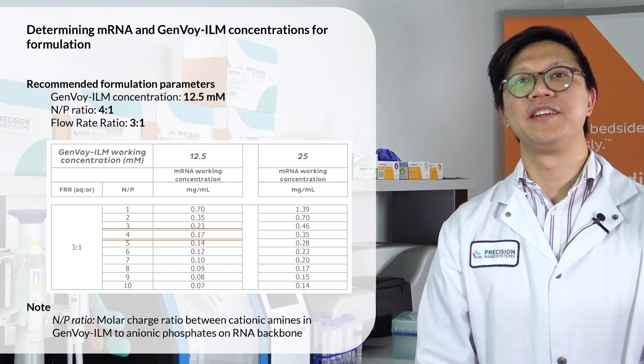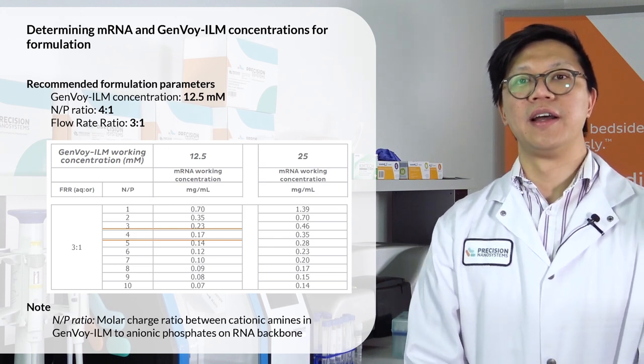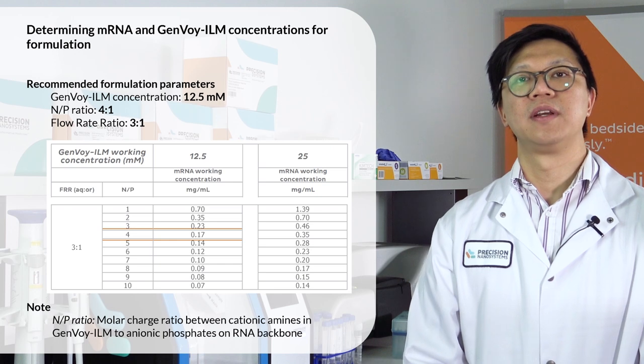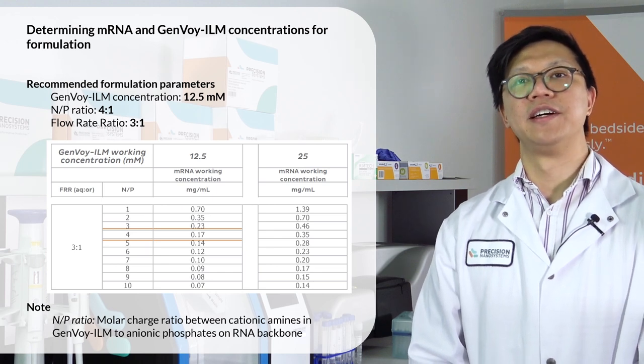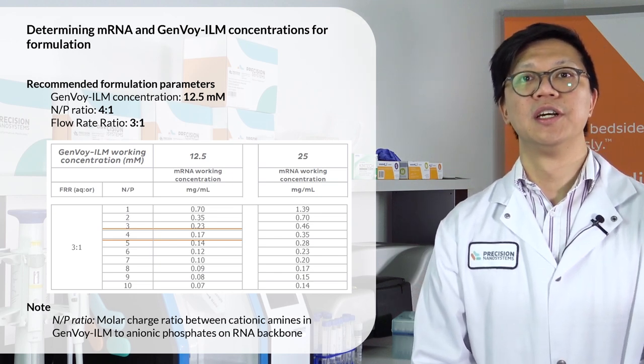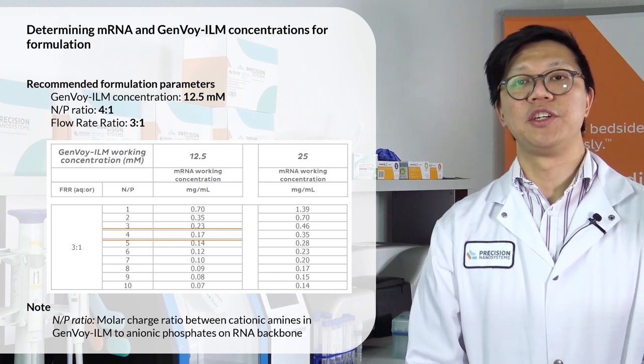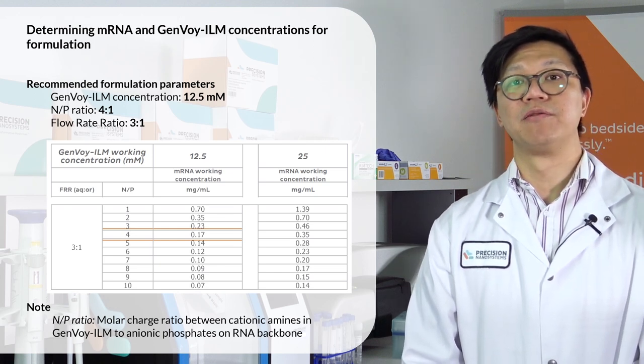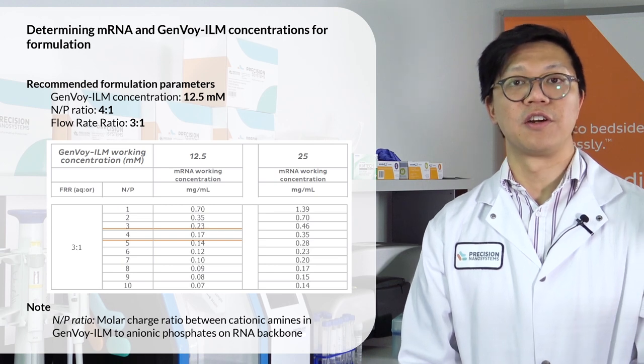Next, we'll be calculating the dilution of your mRNA in the formulation buffer. The formulation buffer is an acidic buffer that was provided with GenVoy. It's essential in order to ensure that your ionizable lipid is fully ionized and to ensure that you have very high encapsulation efficiencies. You'll be diluting the mRNA that we've just calculated in the formulation buffer. We'll be using GenVoy ILM at a concentration of 12.5 mM. We'll be choosing an N-to-P ratio of 4-to-1. Now the N-to-P ratio is the ratio between the cationic charges in your lipid and the anionic phosphates on the RNA backbone. So picking a 4-to-1 ratio means there are 4 times as many cationic charges as anionic charges, and we find that this ratio is a good place to start for mRNA formulations.